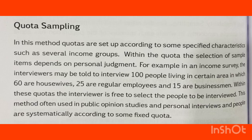The third method is Quota Sampling. In this method, quotas are set up according to specified characteristics such as income groups. The selected sample items depend on personal judgment. For example, in an income survey, interviewers may be told to interview 100 people: 60 housewives, 25 regular employees, and 15 businessmen. Within these quotas, the interviewer is free to select the people to be interviewed.